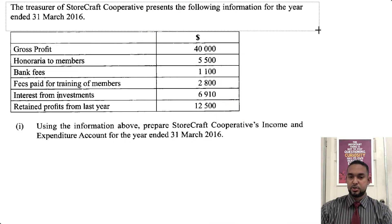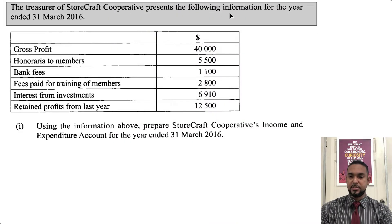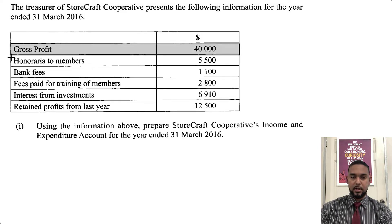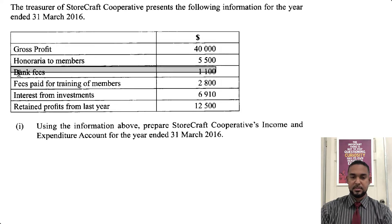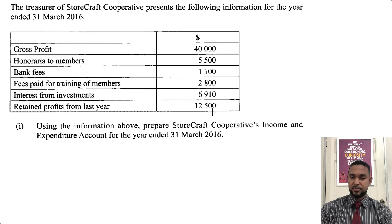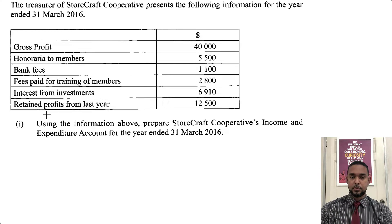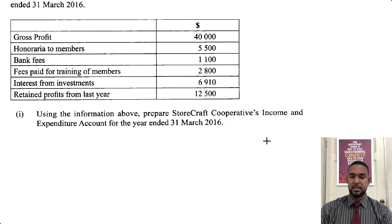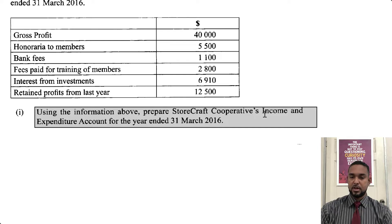So let's take a read. It says the Treasurer of Storecraft Cooperative presents the following information for the year ended 31st March 2016. We have gross profits, honoraria to members, bank fees, fees paid for training of members, interest from investments — that's an income — and retained profits from last year. What they want: using the information above, prepare Storecraft Cooperative's income and expenditure account for the current year end.